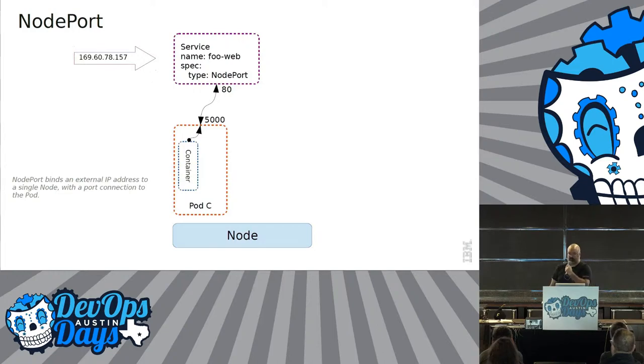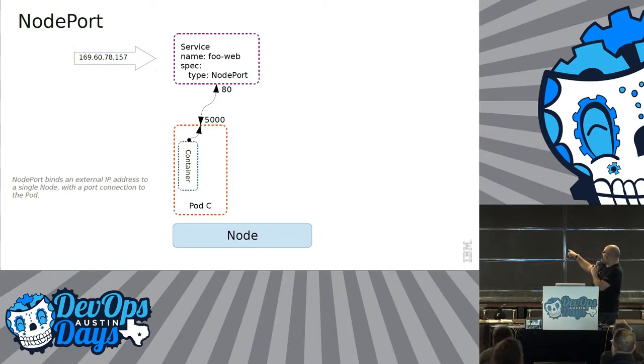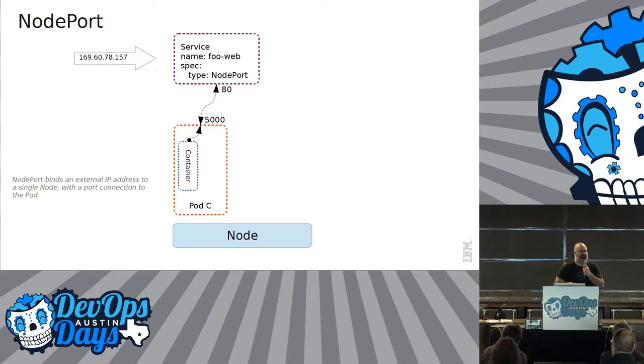A node port — don't use these. They're basically a way to point from one service to a specific pod in a specific container. Don't use these.